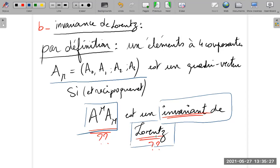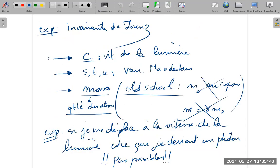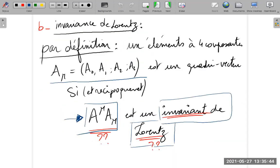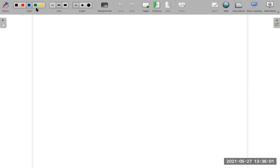If you have a four-vector, then its scalar product is an invariant of Lorentz. It's just a calculation to show that the scalar product is an invariant of Lorentz. What is the question of the scalar product? So, how to calculate the scalar product of a four-vector?